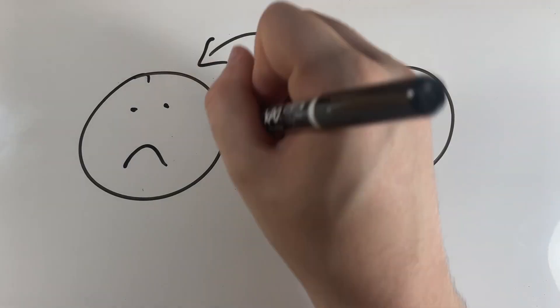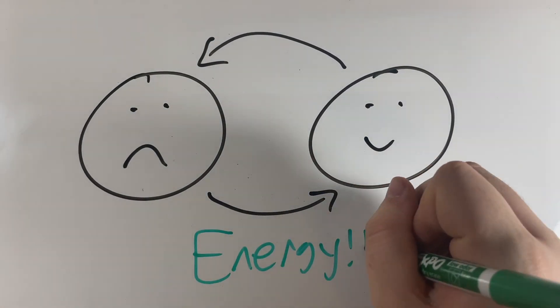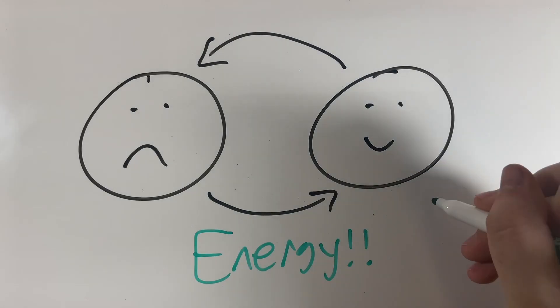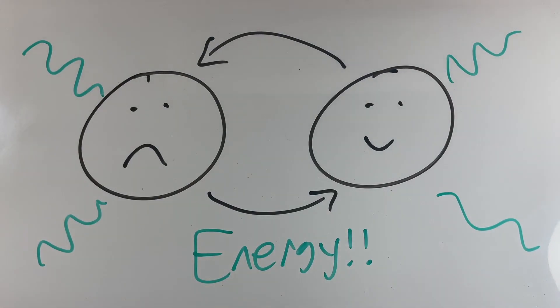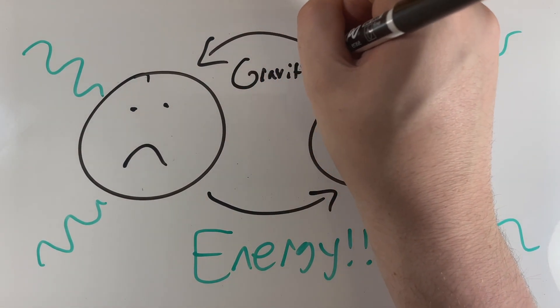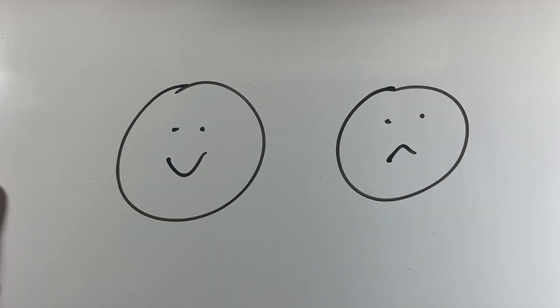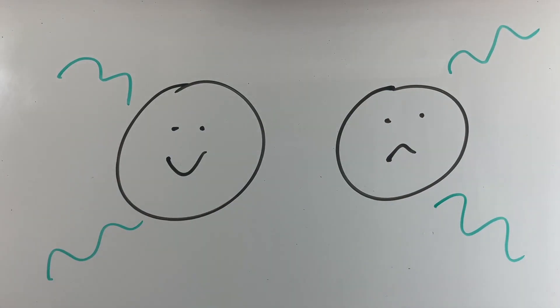And as Barbara and Bill here orbit each other, they begin to emit energy. Now, this energy is actually ripples in the fabric of reality extending outwards from these two black holes. These are called gravity waves. As these gravity waves shoot out from Barbara and Bill, the two begin to lose energy and draw closer to one another.